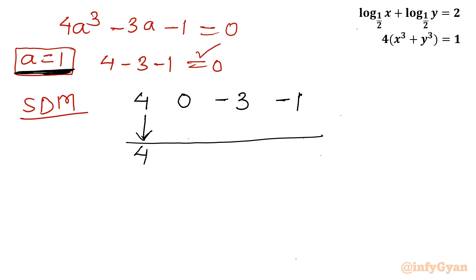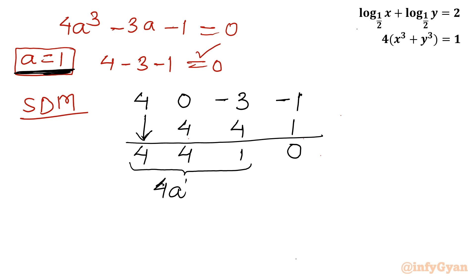Carrying out the synthetic division with root a equal to 1: we bring down 4, multiply to get 4, add to get 4, multiply to get 4, add to get 1, multiply to get 1, add to get 0. The resulting coefficients for the quotient quadratic equation are 4, 4, and 1, giving us: 4a square plus 4a plus 1 equal to 0.